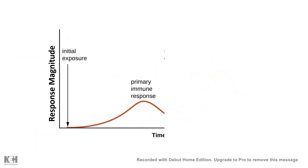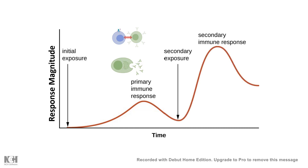In this video I'll be talking about memory T cells. Let's say our body is invaded by a pathogen. After the initial exposure, our body will mount an immune response triggered by T helper cells, which activate B cells, and the plasma cells secrete specific antibodies against that pathogen or antigen. After the primary immune response, the magnitude dampens down, but if there is a second exposure to the same pathogen, there could be a secondary immune response which would be faster and higher in magnitude.